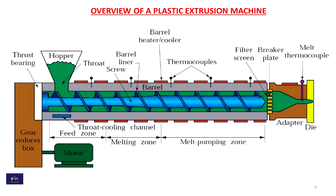This is the overview of the plastic extrusion machine. The different zones are: feed zone, melting zone, melt piping zone, and the different parts of the extrusion machine.